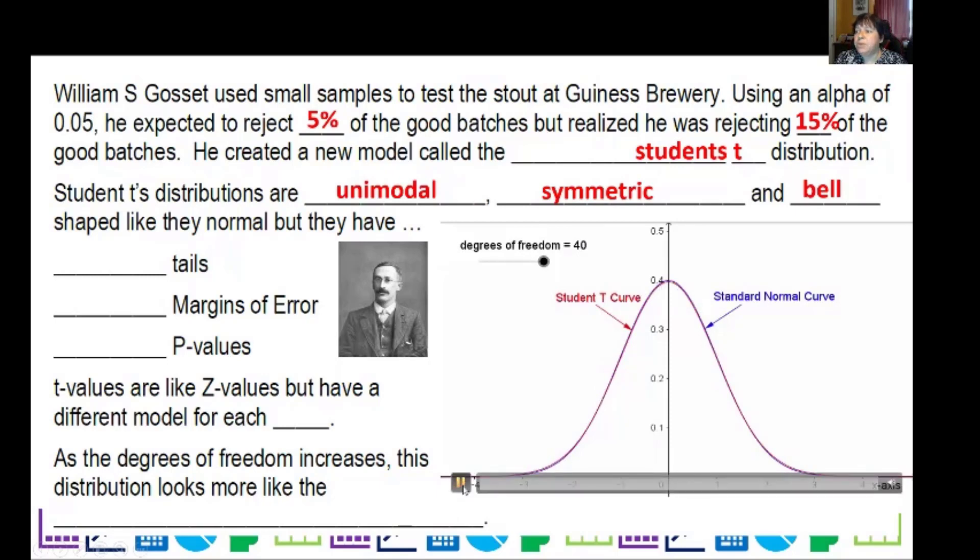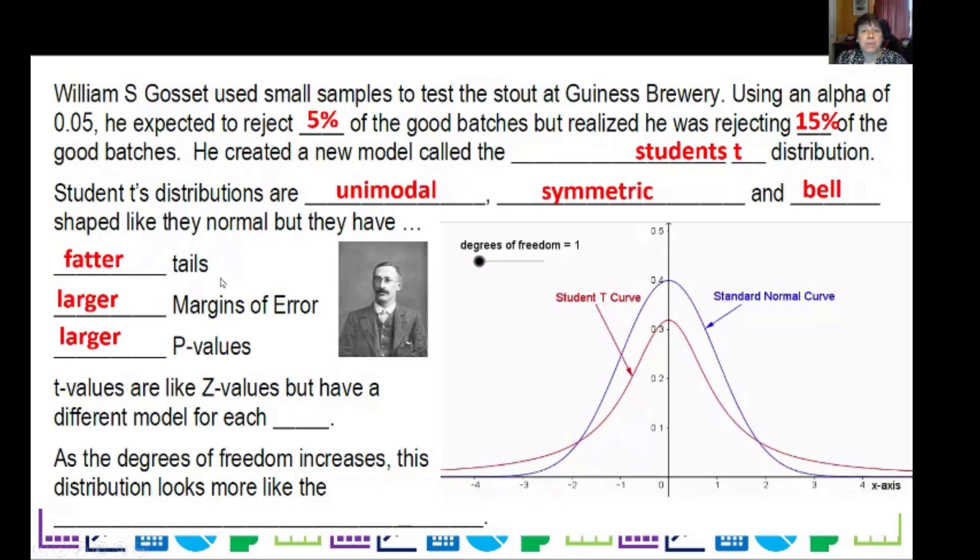So what happens as our degrees of freedom go down? As I adjust the degrees of freedom here, you can see that this is starting to come down a little, and then these tails are starting to get fatter. So they have fatter tails, which means we're going to have a larger margin of error compared to a normal distribution, and larger p-values.